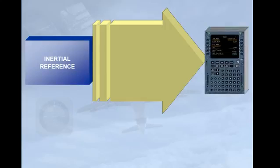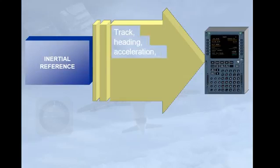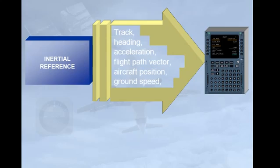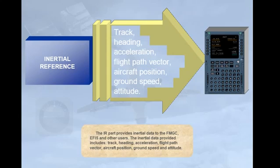The IR part provides inertial data to the FMGC, EFIS, and other users. The inertial data provided includes Track, Heading, Acceleration, Flight Path Vector, Aircraft Position, Ground Speed, and Attitude.